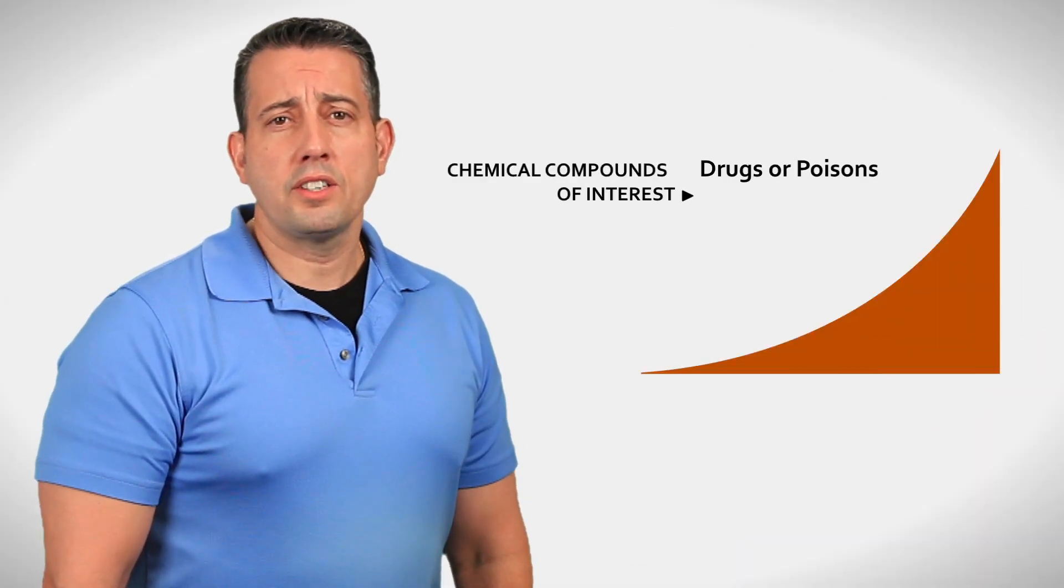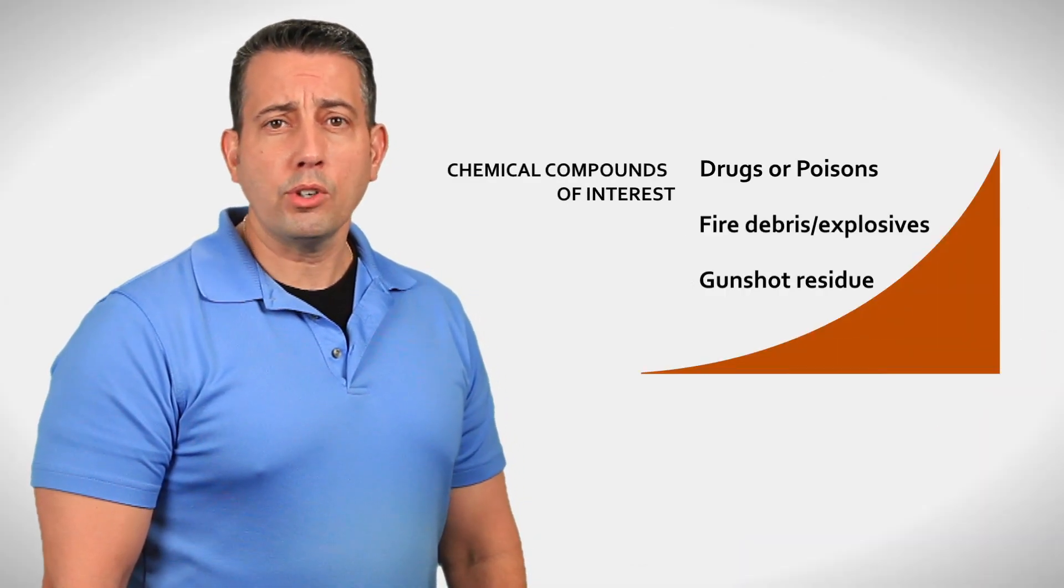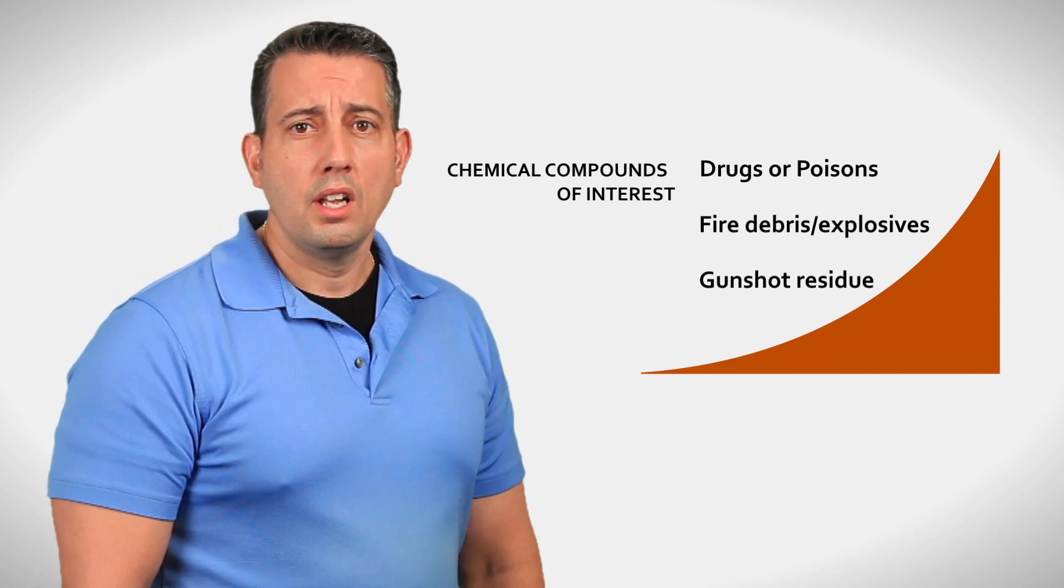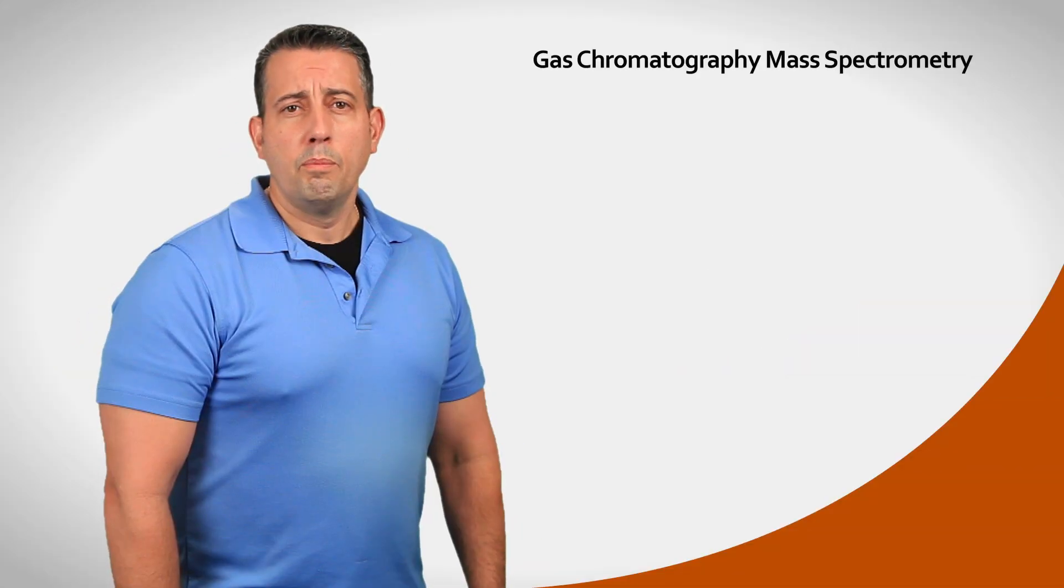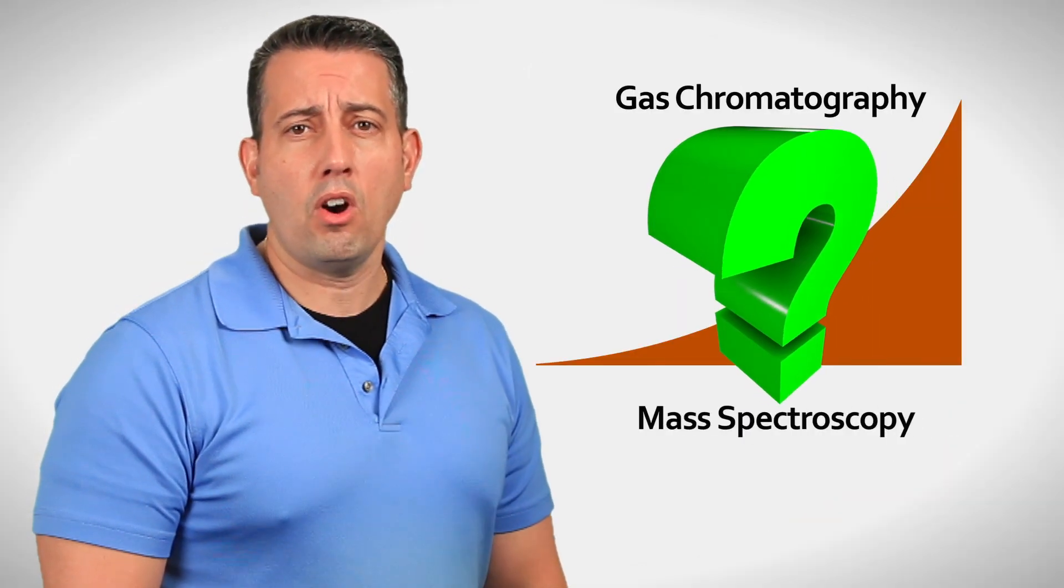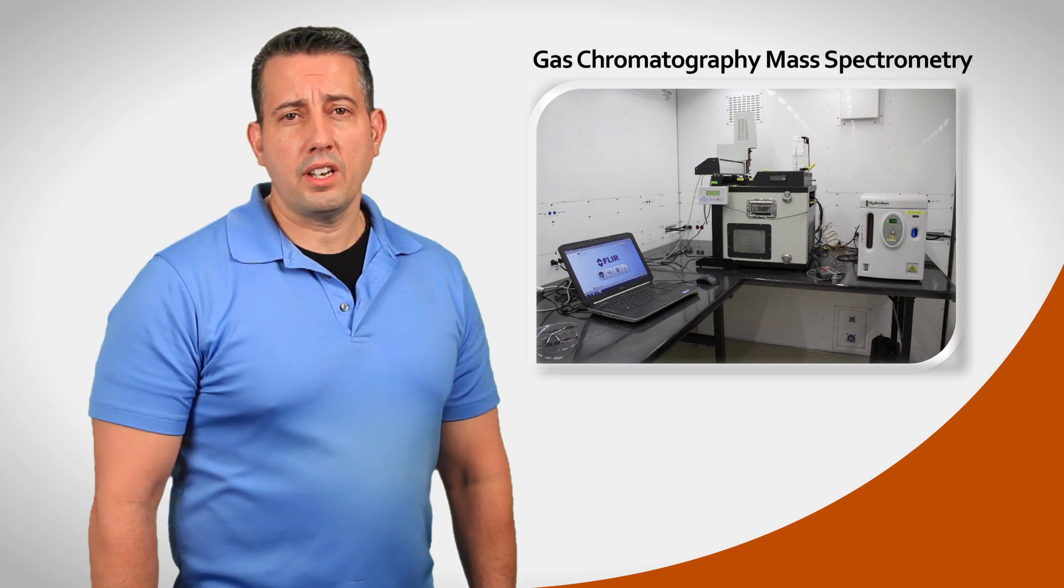A chemical analyzer is used to detect and identify chemical compounds of interest, which can include drugs, poisons, fire debris, explosives, or gunshot residue. But what exactly is GCMS, and how does it work? This video will briefly explain what both are and how they are applied in forensic science.